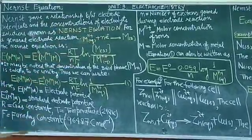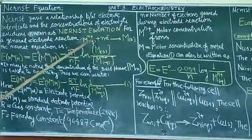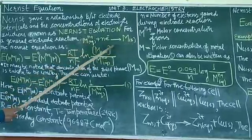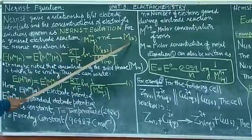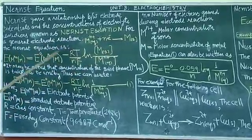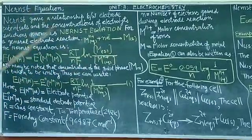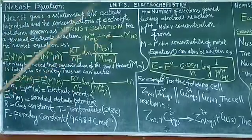For example, let me consider a general electrode reaction. This is a general electrode reaction: M^n+ + ne^- → M(s). The Nernst equation can be written like this. This is the Nernst equation for this reaction.